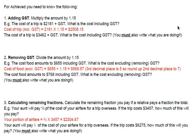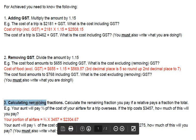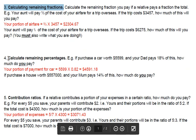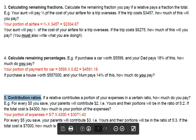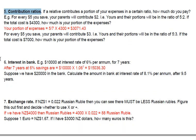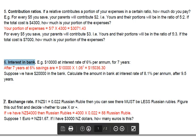Number Assessment Summary for Achieved. For Achieved, you need to know the following: 1. Adding GST. 2. Removing GST. 3. Remaining Fractions. 4. Calculating Remaining Percentages. 5. Contribution Ratios. 6. Interest in Bank. And 7. Exchange Rate.